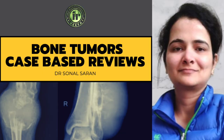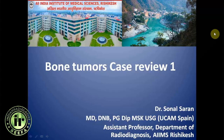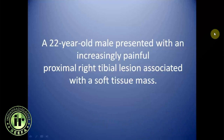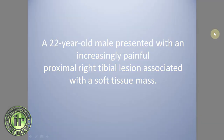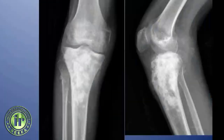Welcome to the case review session of bone tumors. This is the case of a 22-year-old male who presented with an increasingly painful proximal right tibial lesion associated with a soft tissue mass. This is the AP and lateral radiograph of the right knee joint of the patient.